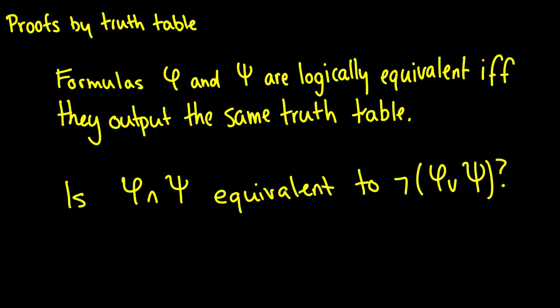So here we go. We say that two formulas, or statements, φ and ψ, are logically equivalent if they both output the same truth table. That means on each line of the truth table we get exactly the same output. So here's a question.